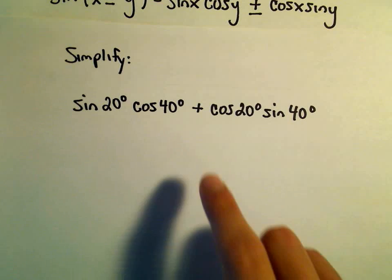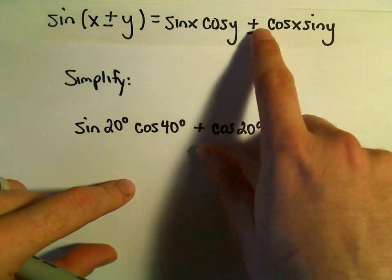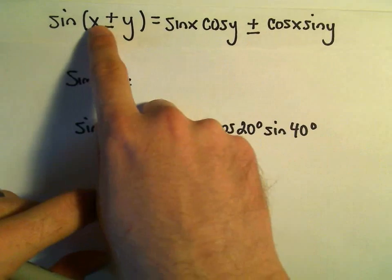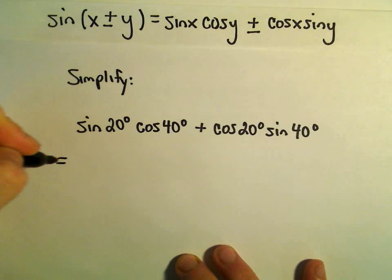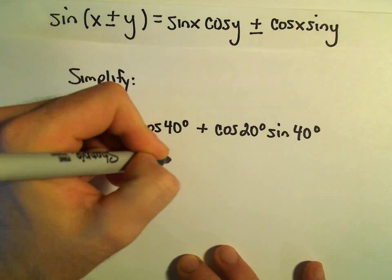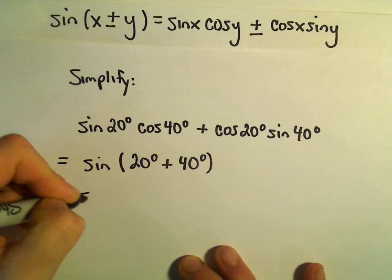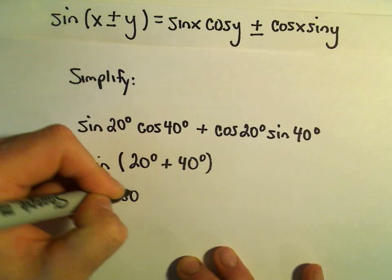If there's a positive sign in between, again, for our sine identity, it says if there's a positive sign, we keep a positive in between. So this is simply going to equal sine of 20 degrees plus 40 degrees, and that simply gives us sine of 60 degrees.